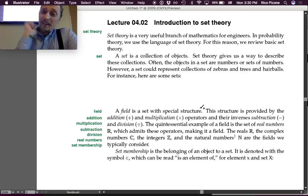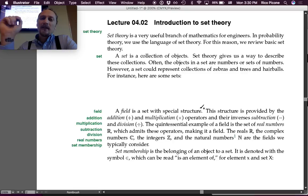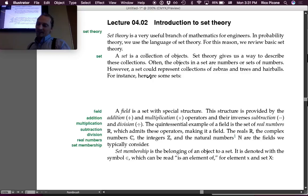A set is a collection of objects. Set theory gives us a way to describe these collections. Often the objects in a set are numbers or sets of numbers. However, a set could represent collections of zebras, trees, and hairballs. For instance, here are some sets.